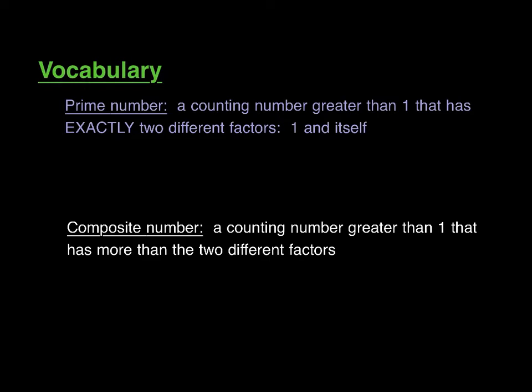We have two vocabulary words today. Prime number, which is a counting number greater than 1 that has exactly 2 different factors, 1 and itself. And then we have composite number, which is a counting number greater than 1 that has more than the two different factors.